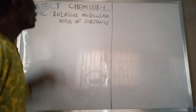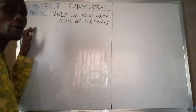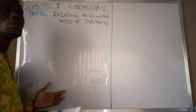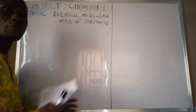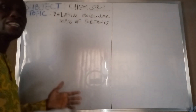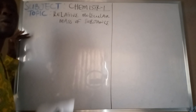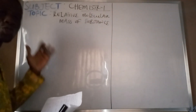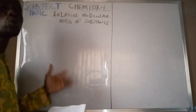Now, assuming you are being given a question to calculate the relative molecular mass of a particular substance, how do you go about it? The relative molecular mass of a substance is basically the sum of all the atoms of elements in a particular substance, especially in a compound. They give you their respective relative atomic masses, you add them up together, and when you sum them together they give you the relative molecular mass.